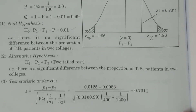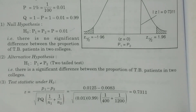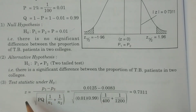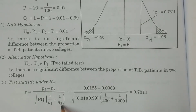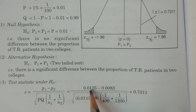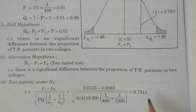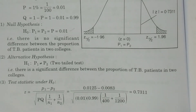Third point: the test statistic under H0. Since this is Case 1 where capital P is known, the formula is Z = (p1 − p2) / sqrt(P × Q × (1/N1 + 1/N2)). Calculating this gives Z equal to 0.7311.